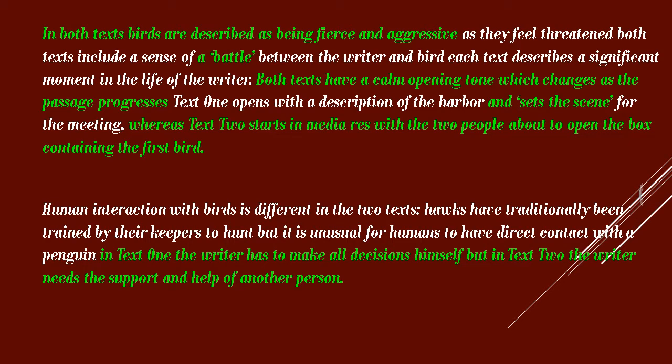Text 1 opens with a description of the harbor and sets the scene for the meeting, whereas Text 2 starts in medias res with the two people about to open the box containing the bird. Human interaction with birds is different in the two texts — hawks have traditionally been trained by keepers to hunt, but it is unusual for humans to have direct contact with a penguin.